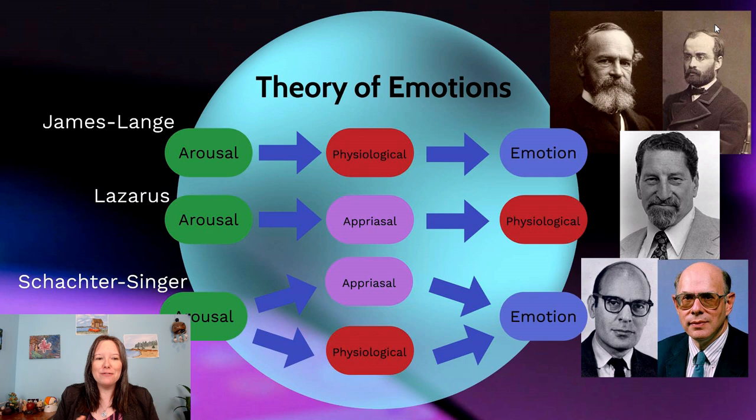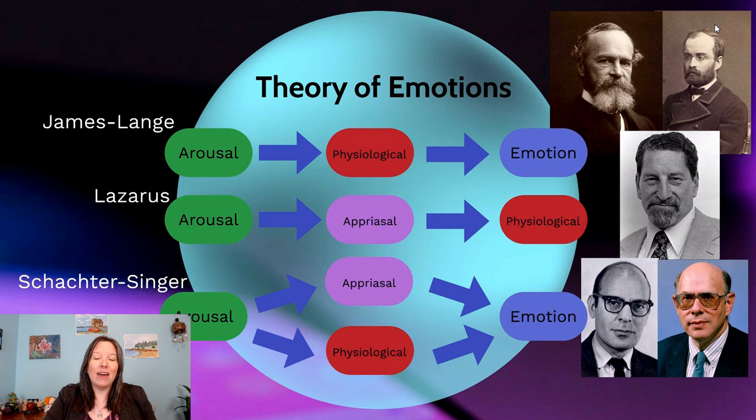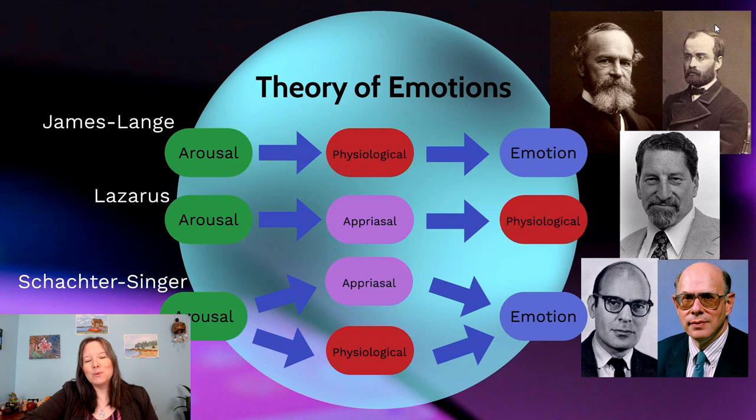That's why, through the work of Lazarus, we started to also include our cognitions — our thoughts about what was happening. Lazarus said it wasn't just seeing the snake that makes our heart go fast. We have to appraise the situation. Our cognitive appraisal — recognizing that the snake is venomous, that the snake is dangerous — is what sends us into our physiological state of heart racing and blood pressure increasing, and then that in turn causes the emotion.